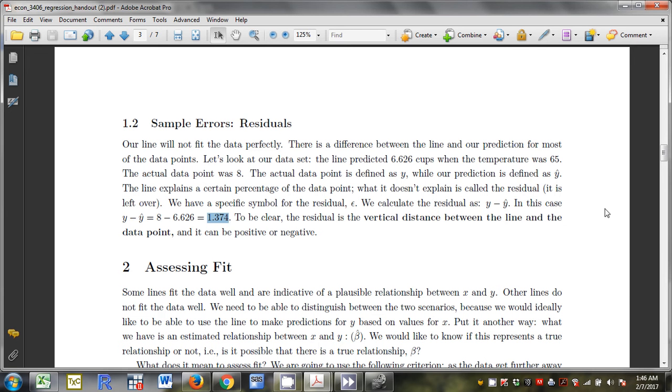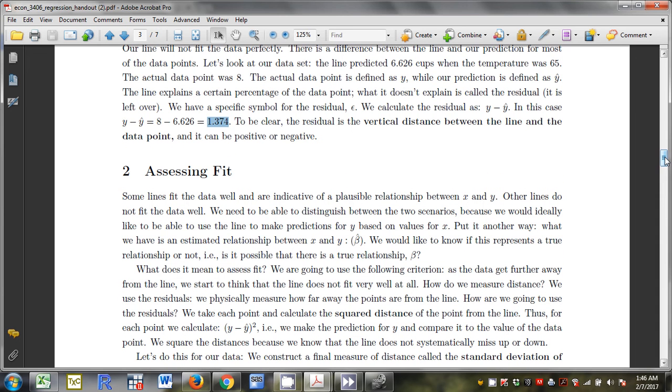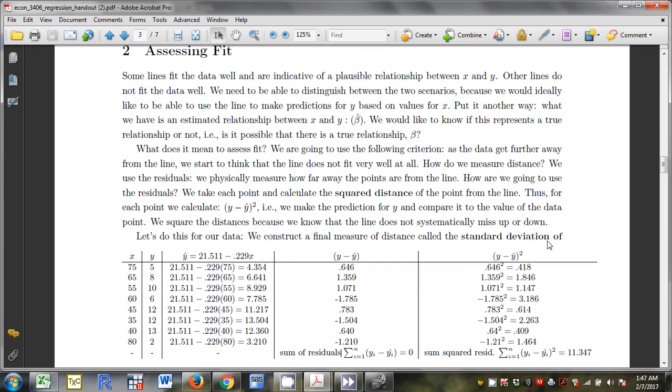Now some lines fit the data well. Other lines do not. We need to be able to distinguish between the two. We'd like to be able to use the line to make predictions for y based on values of x. So all I have is an estimated slope. I'd like to know if it represents something about a real slope. What we think is going on is that as the data get further away from the line, we start to think the line doesn't fit very well. And we're going to measure distance with the residuals. We're physically going to measure how far away the points are from the line. This is going to lead us to calculate a standard deviation of the regression.